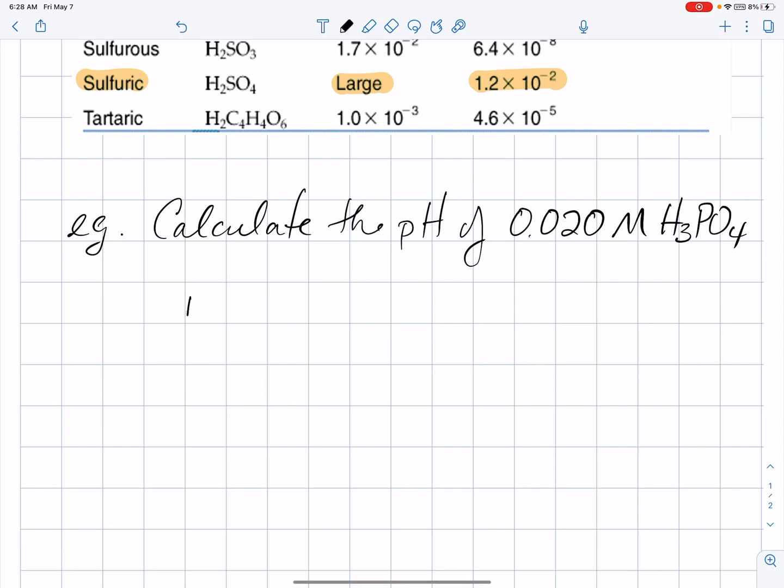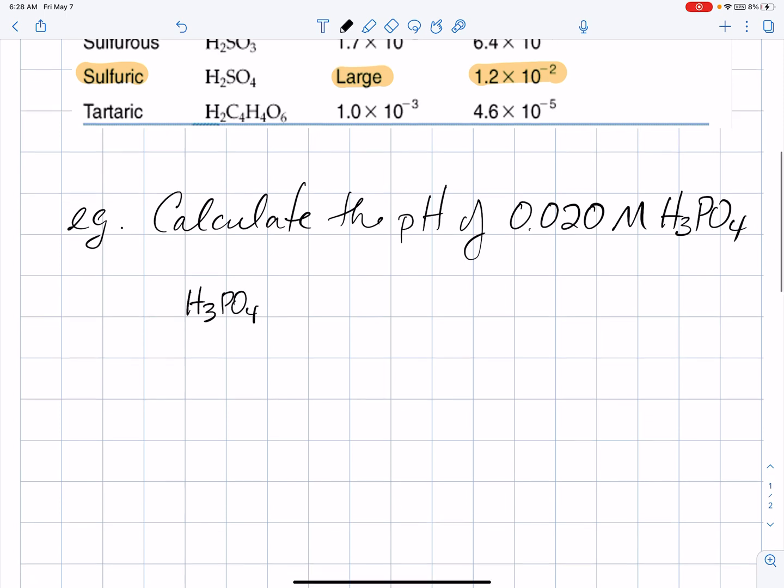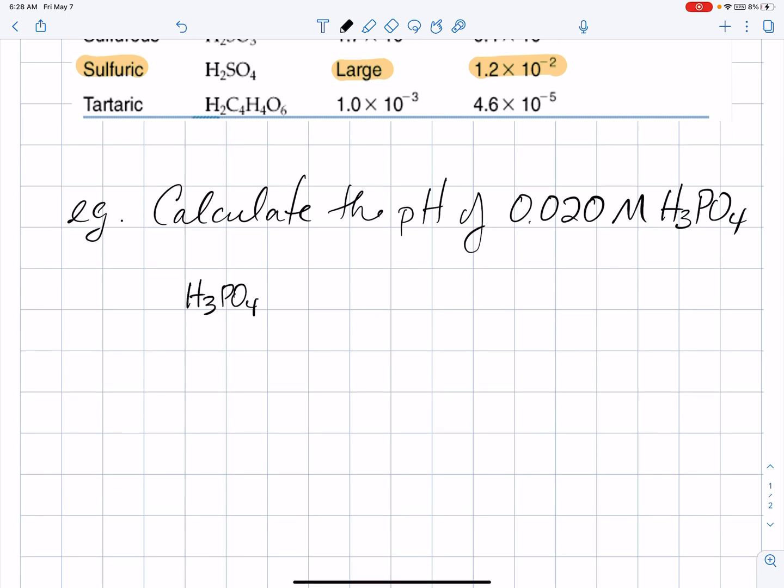So, we take the acid, H3PO4, and we're going to react it with the water that it's dissolved in. Bronsted and Lowry tell us that the acid donates the hydrogen ion to water. So, the water will accept that and become H3O positive, the hydronium ion.